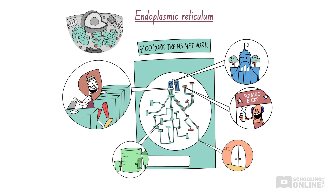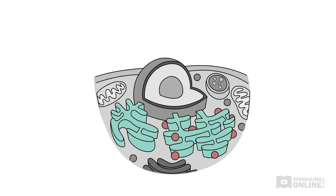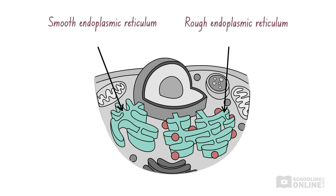Of course, while passengers are processed into and transported by the subway, the endoplasmic reticulum processes proteins and lipids before transporting them to other locations in the animal cell. The endoplasmic reticulum can be rough or smooth, depending on the attachment of ribosomes. Ribosomes perform protein synthesis, which we'll discuss later in this video.